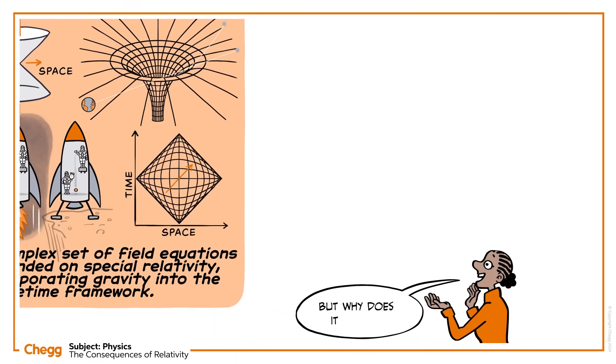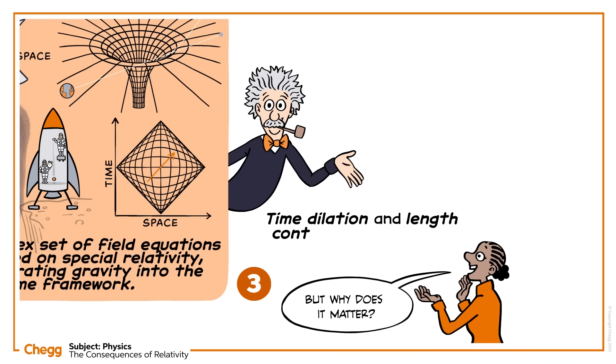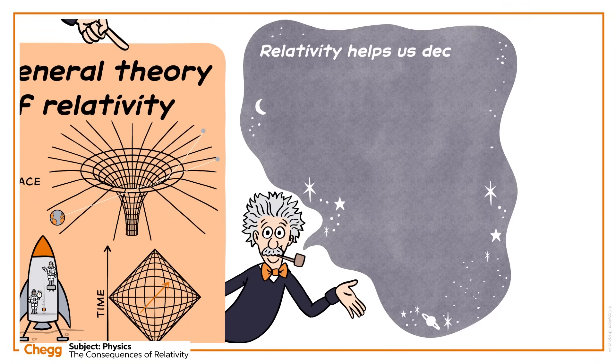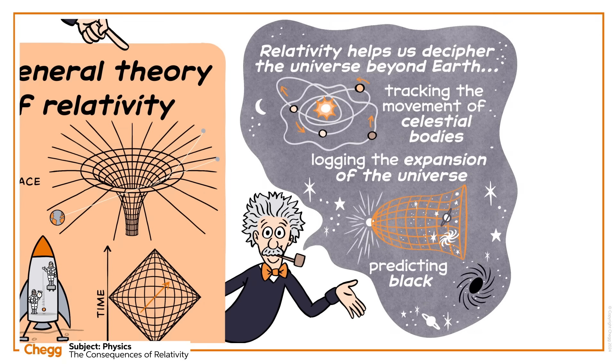But why does it matter? Does this theory have real-world implications? Well, time dilation and length contraction only occur at velocities close to the speed of light. Relativity helps us decipher the universe beyond Earth, like tracking the movement of celestial bodies, logging the expansion of the universe, or predicting black holes.